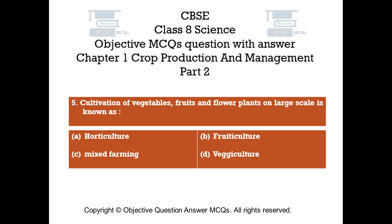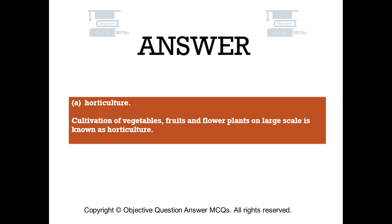Question number 5. Cultivation of vegetables, fruits, and flower plants on large scale is known as. Option A: Horticulture. Option B: Fruticulture. Option C: Mixed farming. Option D: Vegaculture. The right answer is Option A, Horticulture. Cultivation of vegetables, fruits, and flower plants on large scale is known as horticulture.